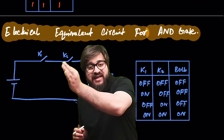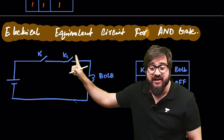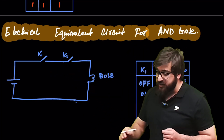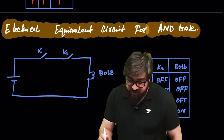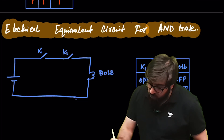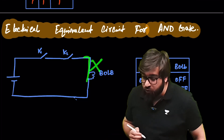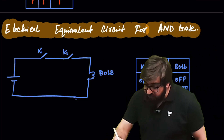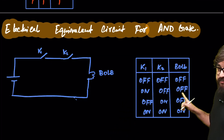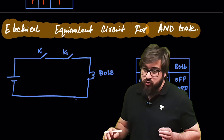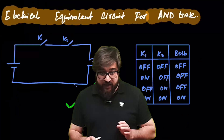The electrical equivalent circuit of the AND gate has two keys connected in series with a bulb. If key 1 is off and key 2 is off, current cannot flow, so the bulb remains off. If key 1 is on and key 2 is off, current still cannot flow — bulb remains off. Only when both keys are on does the bulb glow.